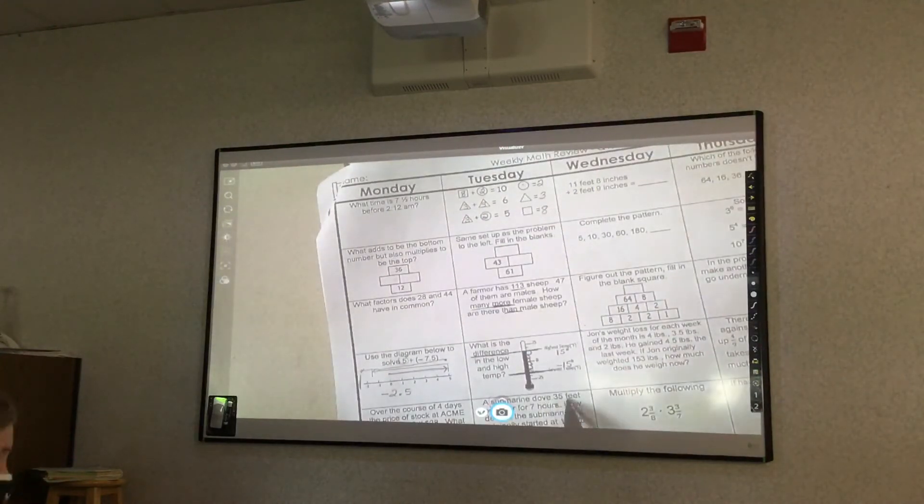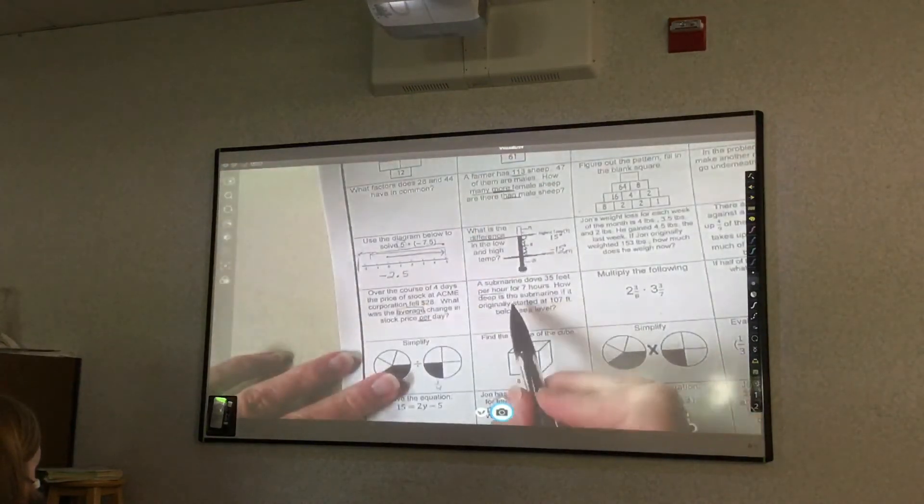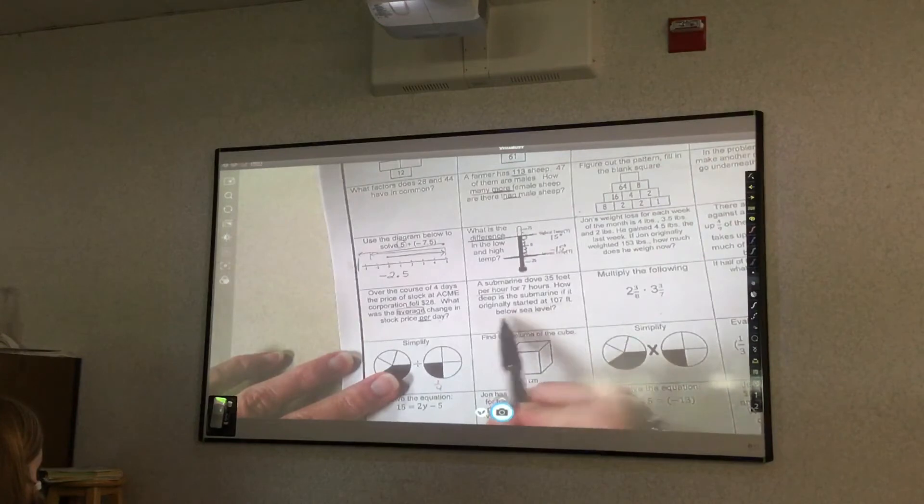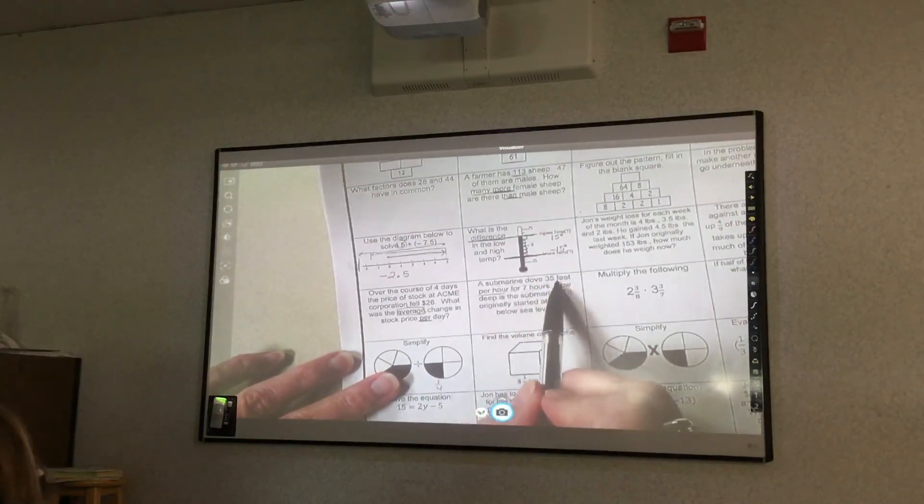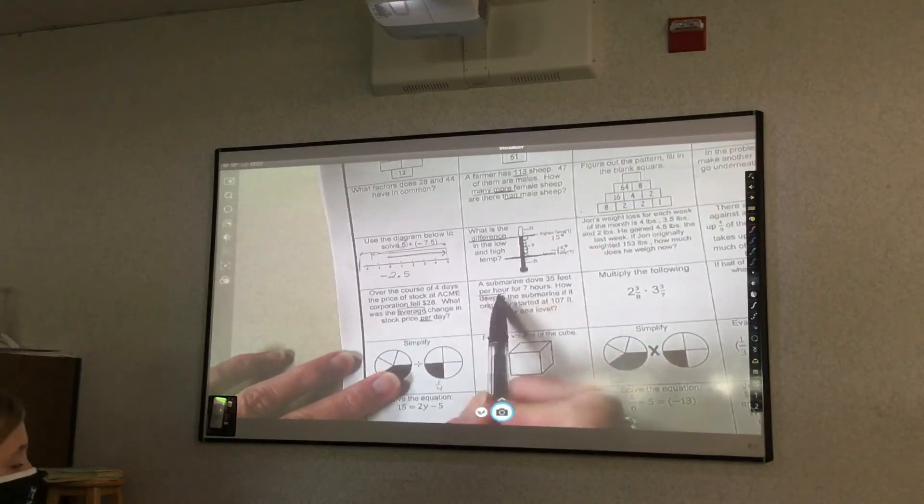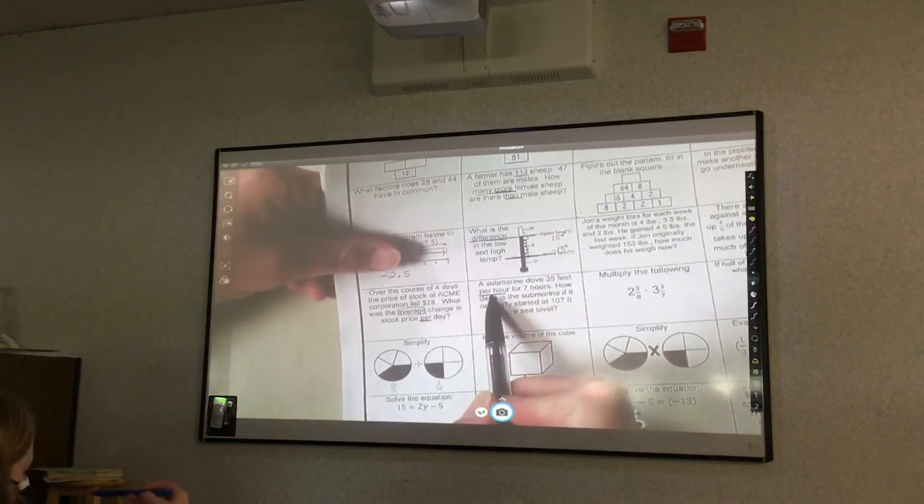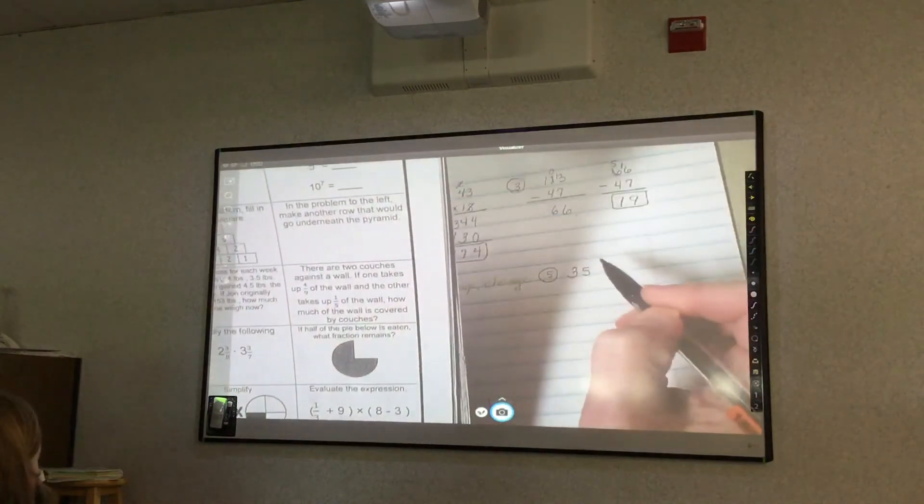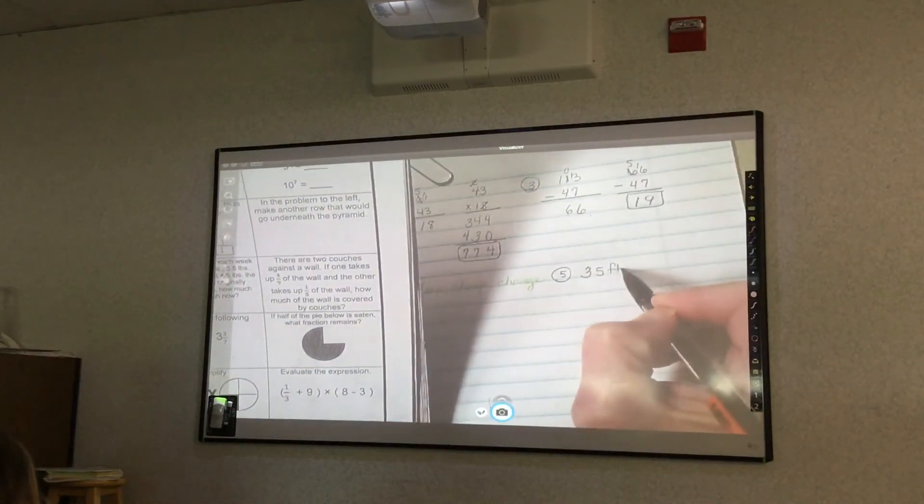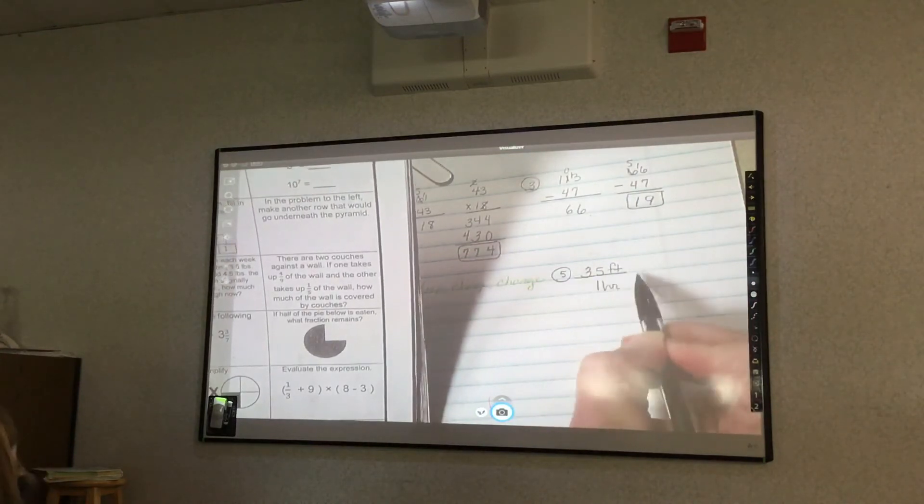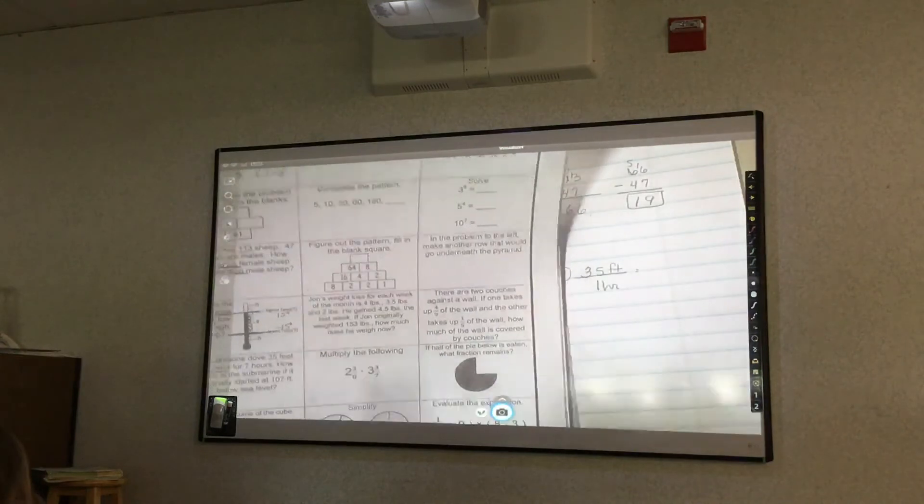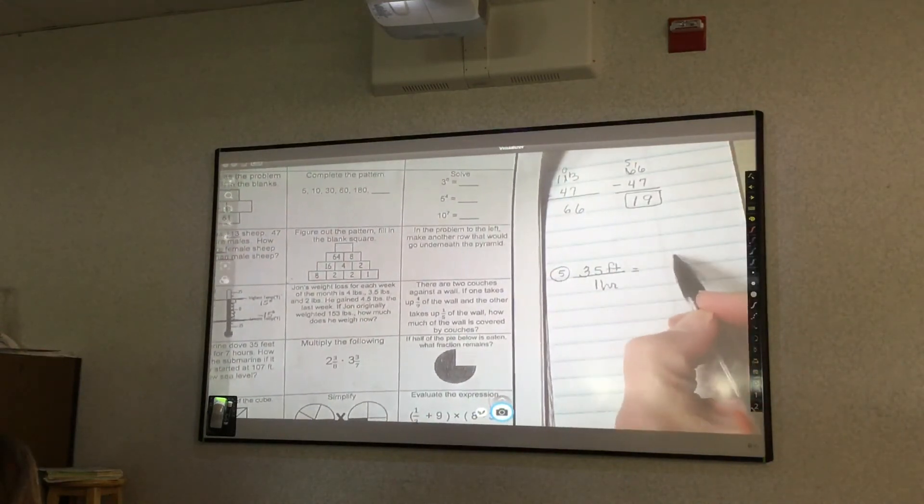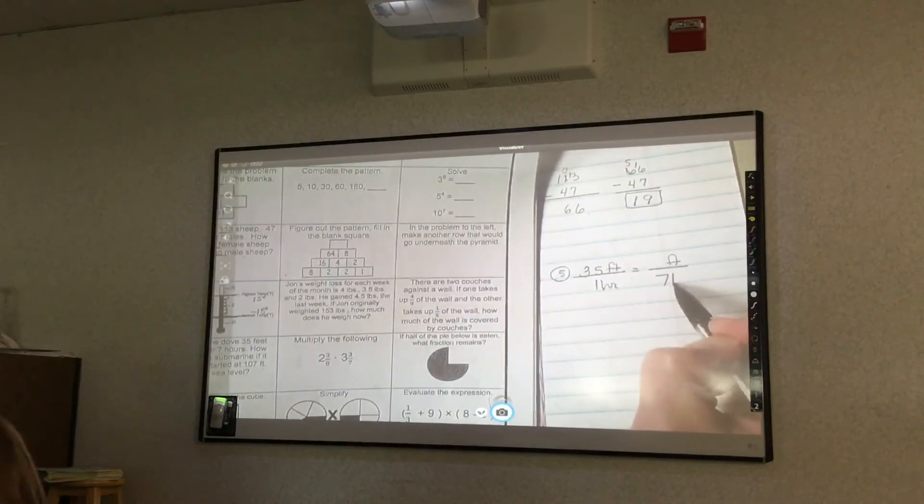A submarine dove 35 feet per hour for seven hours. How deep is a submarine if it originally started at 107 feet below sea level. So I dove 35 feet per hour for seven hours. At per hour, I know, like I've done the last few weeks, I'm setting up a ratio. So I write 35 feet per one hour, and it says I did it for seven hours. Remember, feet have to stay with feet, hours need to stay with hours. So my seven hours is on the bottom.